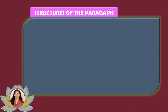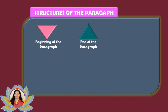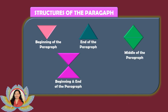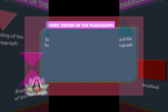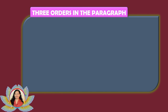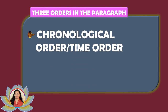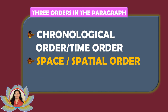Those are the five structures of the paragraph: inverted pyramid, pyramid, diamond, hourglass, and rectangle. Now let's look at the orders of the paragraph. Familiarizing oneself with the different orders of a paragraph is crucial for arranging its content in a coherent manner. There are three orders: first, chronological order or time order; second, space or spatial order; and lastly, logical order.